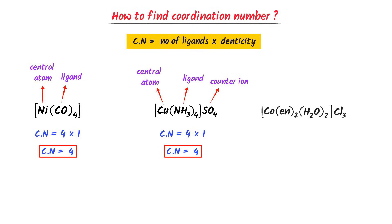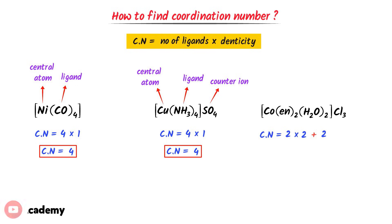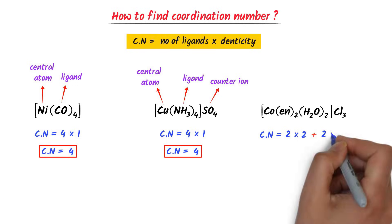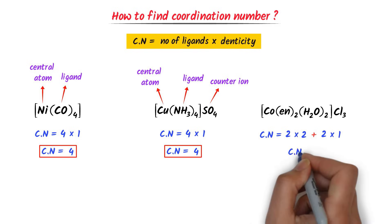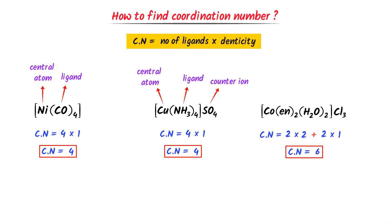Consider this third complex compound. There are two types of ligands: EN and H2O. There are two EN molecules with a denticity of two, plus two molecules of H2O with a denticity of one. So the coordination number is (2 × 2) + (2 × 1) = 6. The coordination number of this compound is six.